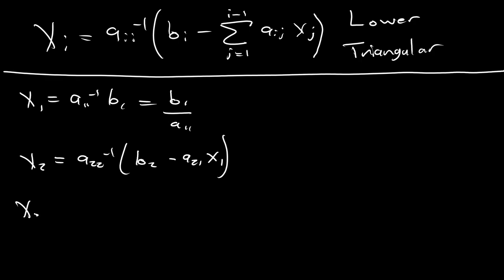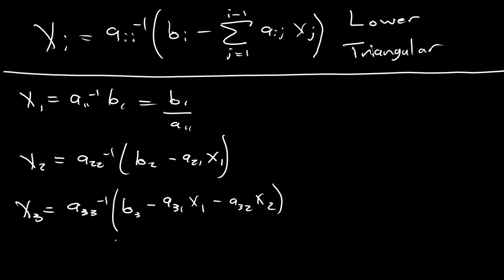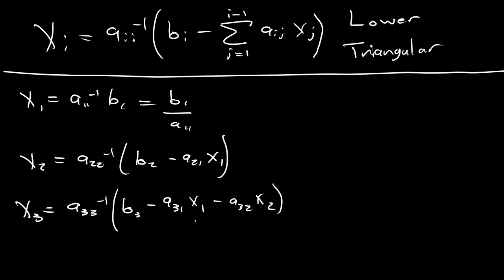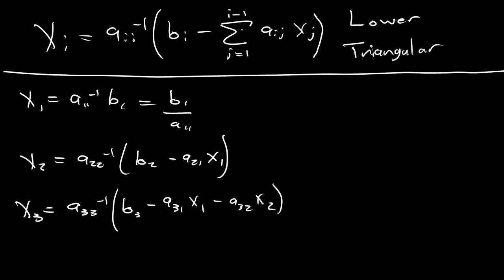We can do the same for x3 and verify everything checks out: a33⁻¹ · (b3 − a31·x1 − a32·x2). Checking: a33⁻¹, b3, minus a31·x1, minus a32·x2 — confirmed. This is the algorithm we can use to solve a linear system where the A-matrix is lower triangular.